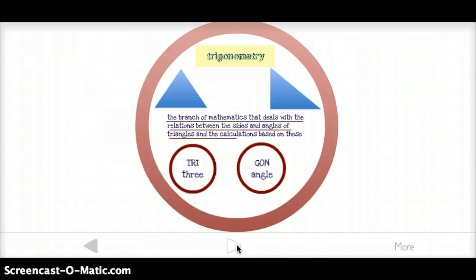And our last word for this week includes three roots. So we have meter for measure, tri for three, and gon for angle. So trigonometry. And trigonometry is just the branch of mathematics that deals with the relation between the sides and angles of triangles and the calculations that you do based on those.